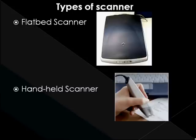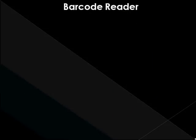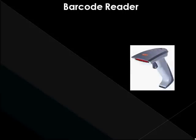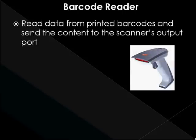A barcode reader, or barcode scanner, is an electronic device for reading printed barcodes. It contains decoder circuitry analyzing the barcode's image data provided by the photoconductor, and sending the barcode's content to the scanner's output port. Barcodes consist of different groups of vertical bars that can be read by an optical scanner. They are printed on nearly every product.